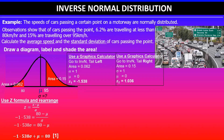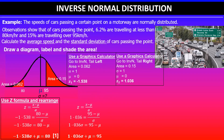We repeat the process for the second z-value. Using z = (x − mean) / standard deviation: 1.036 = (95 − mean) / standard deviation. Rearranging gives: 1.036 × SD + mean = 95. This is our second equation. We now have two equations and two unknowns — mean and standard deviation.